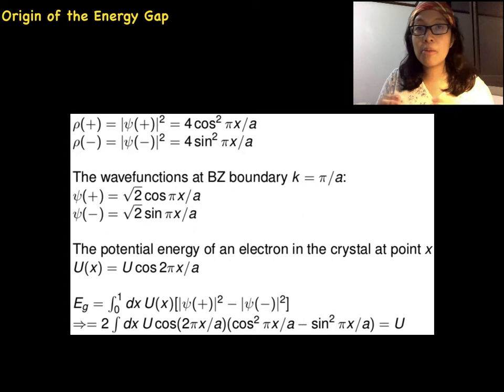The wave functions at the Brillouin zone boundary are normalized over unit length of a line. Review the reading materials to recall how to do the normalization procedure. We write the potential energy of an electron in the crystal as U(x). The first order energy difference between the two standing wave states is given below. We see that the band gap is the Fourier component of the crystal potential.